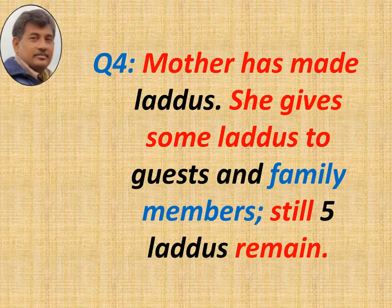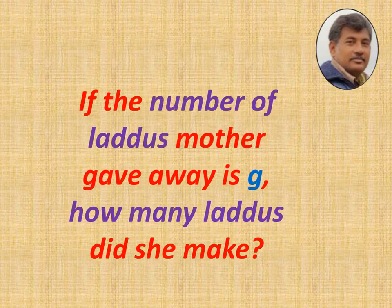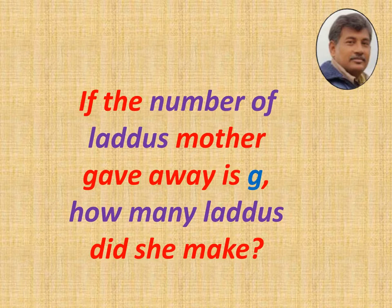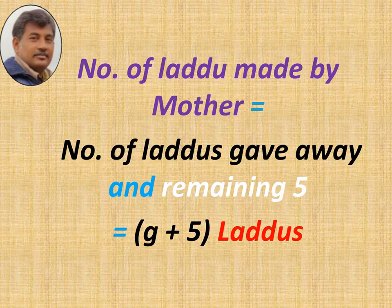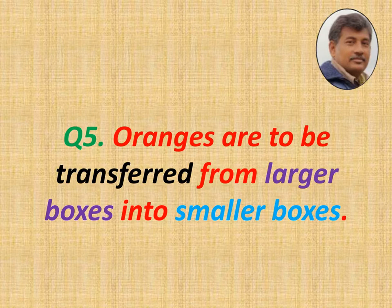Mother made some ladus. She gave some to guests and family members, and still five ladus are remaining. We do not know how many she made. Let the number of ladus she gave away be g. Total ladus made equals ladus given away plus remaining, so the answer is g plus 5.